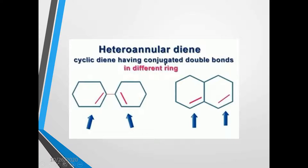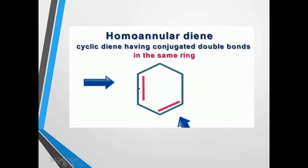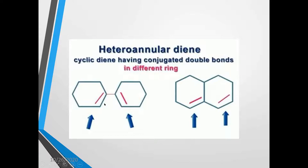Heteroannular diene: if the double bonds are present at conjugated position, but they are situated in different ring structures, then that diene system is called as heteroannular diene. Here you can see the double bonds are present in different ring structures, but it is a diene system — 1, 2, 3, 4 — this part of the diene is called as heteroannular diene. So, if the diene is present inside the ring, it is called as homoannular diene; if the diene system is present in different ring structures, then it is called as heteroannular diene.